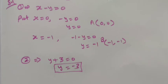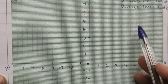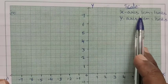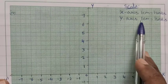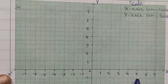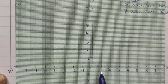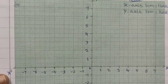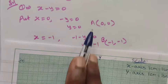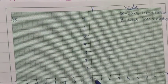Let's see the graph. The scale factor is: x-axis, one centimeter equal to one unit, and y-axis also one centimeter equal to one unit. The horizontal line is the x-axis and the vertical line is the y-axis. By this scale we plot the points. The first point, A, is (0, 0) — that is the origin.